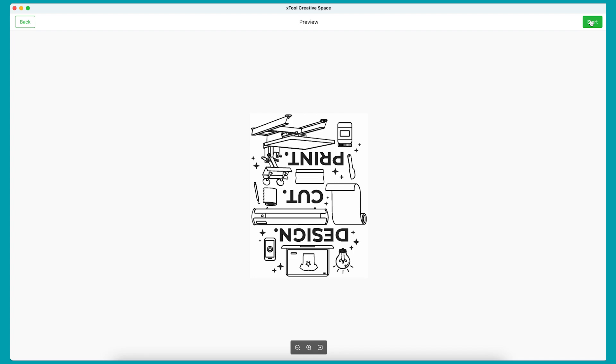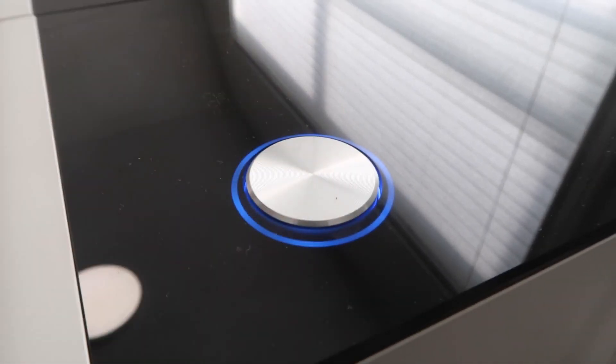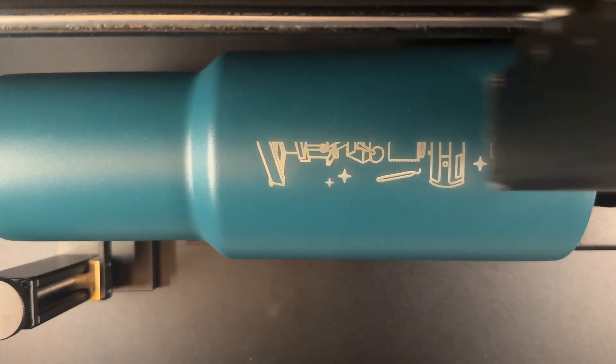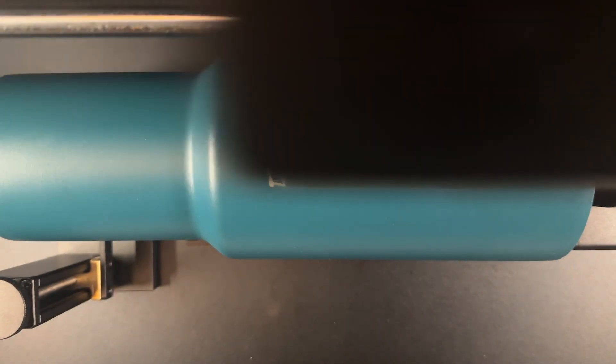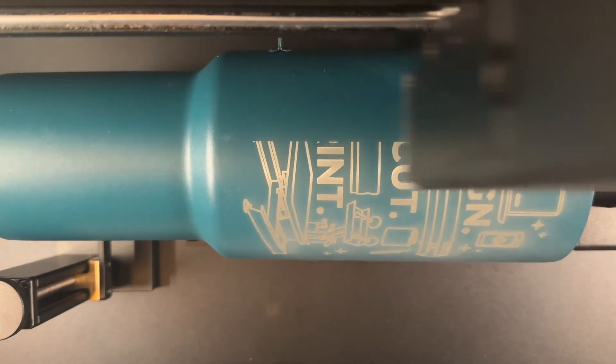Double check that your design is all there and then click the start button. This is a look at the real-time speed of the P2 laser doing the engraving. And now I'm going to speed up the video so you can see how it finishes.